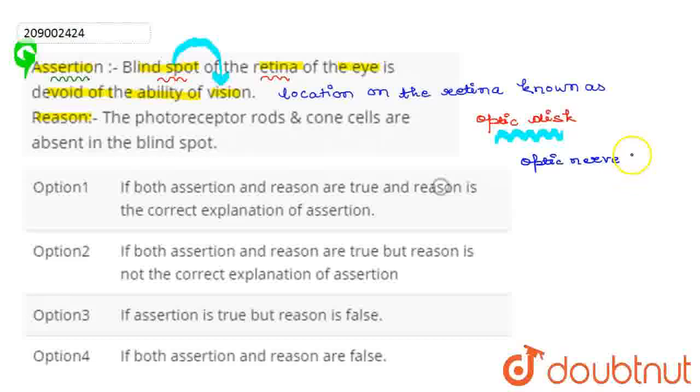So, the reason is the photoreceptor rods and cone cells are absent in the blind spot. The reason is the correct explanation of assertion. So, the correct answer here is option first.